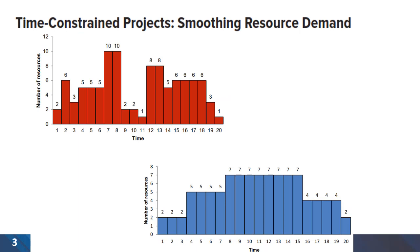As you can see in the red graph, we have time constraint projects with fluctuations in resource demand. In the bottom graph, we have done resource smoothing to make management of resources more feasible.